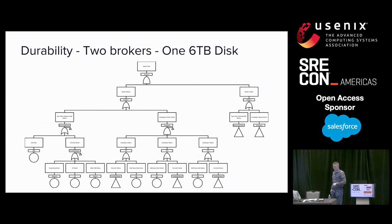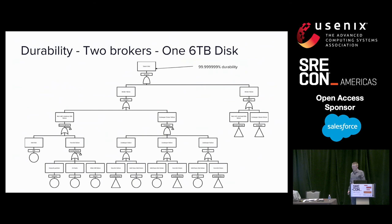If we start with two brokers and assume, for simplicity, one six terabyte disk, and we remember the time-based formula, right off the bat we get past our seven nines of durability. We're doing great right off the bat.